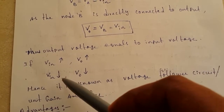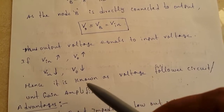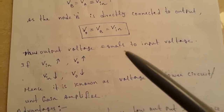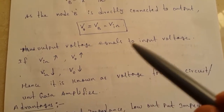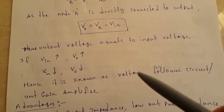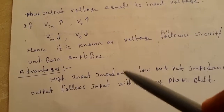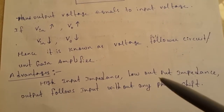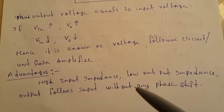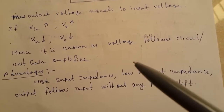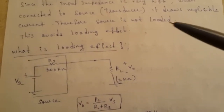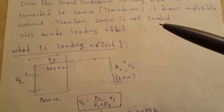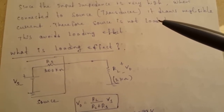Thus the output voltage equals the input voltage VIN. If VIN increases, the output voltage also increases, and if VIN decreases, the output also decreases. Because of this it is known as a voltage follower or unity gain amplifier. Additional advantages include zero phase shift and high input impedance.